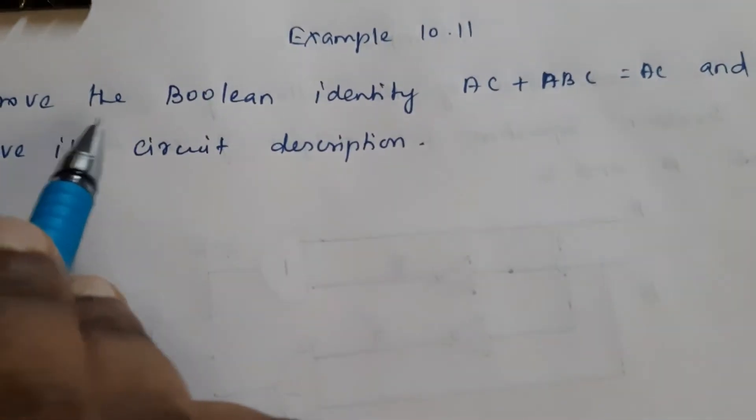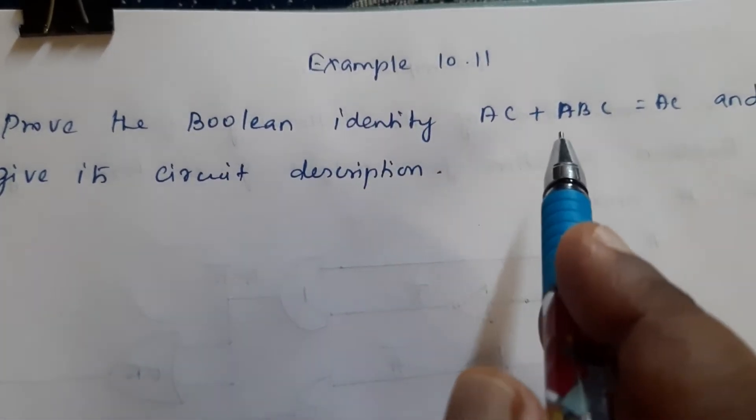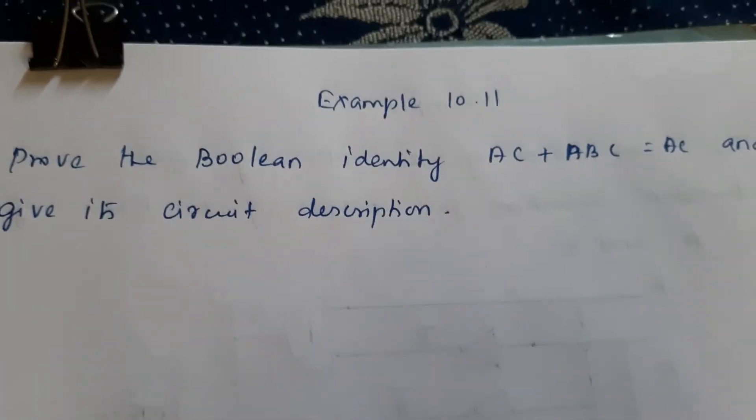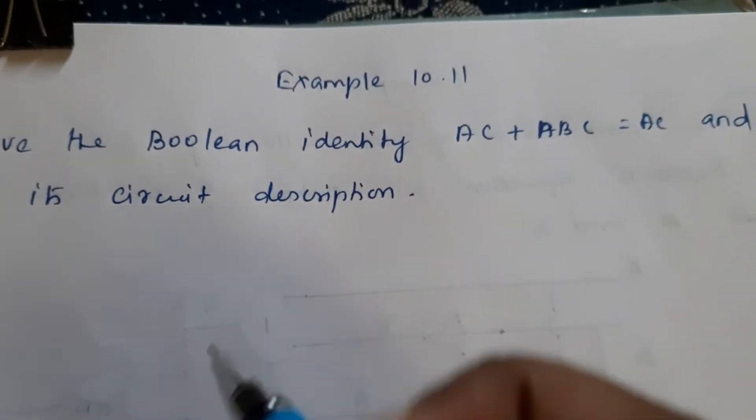Example 10.11. Prove the Boolean identity AC + ABC = AC and give its circuit description.